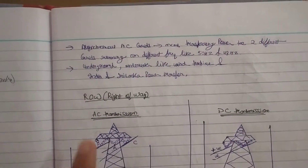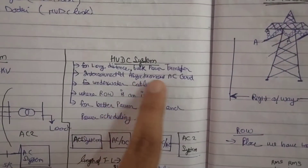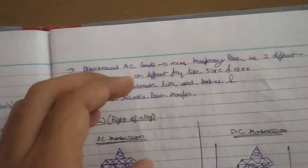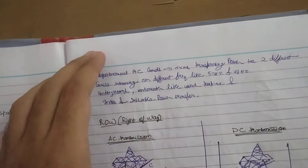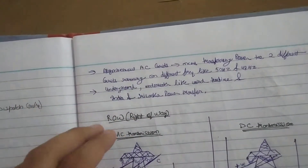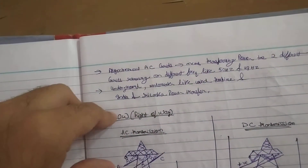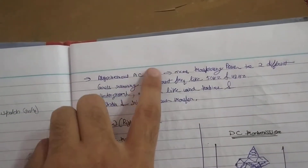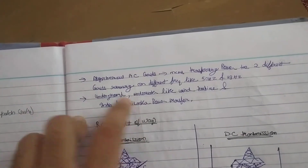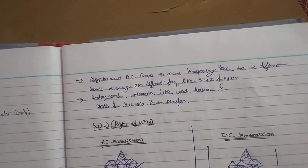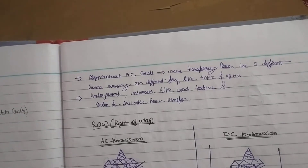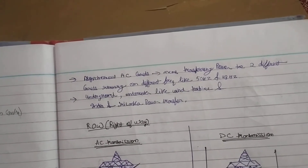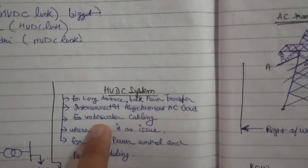Point number 2: interconnected asynchronous AC grids. For an asynchronous AC grid, power cannot be transmitted unless my frequencies match. But if I talk about HVDC, this is possible because the frequency is zero. So with HVDC, asynchronous grid interconnection is feasible. Also, underground cable — we can use HVDC for point number 3.